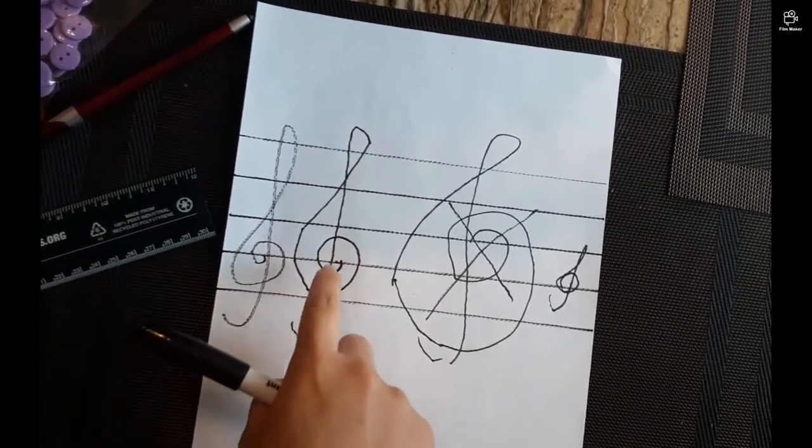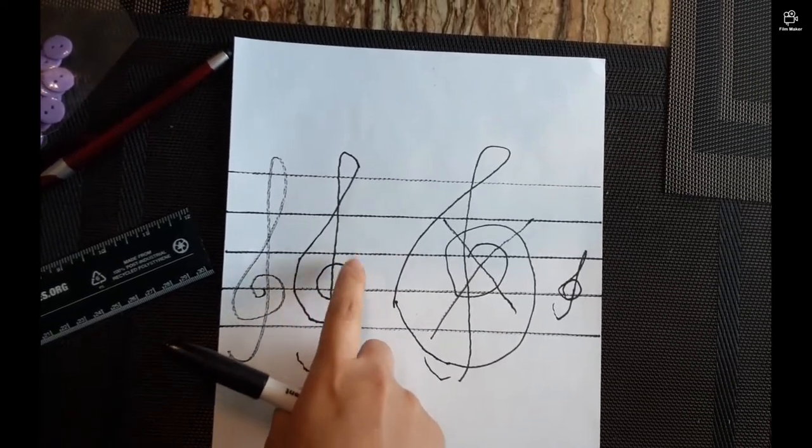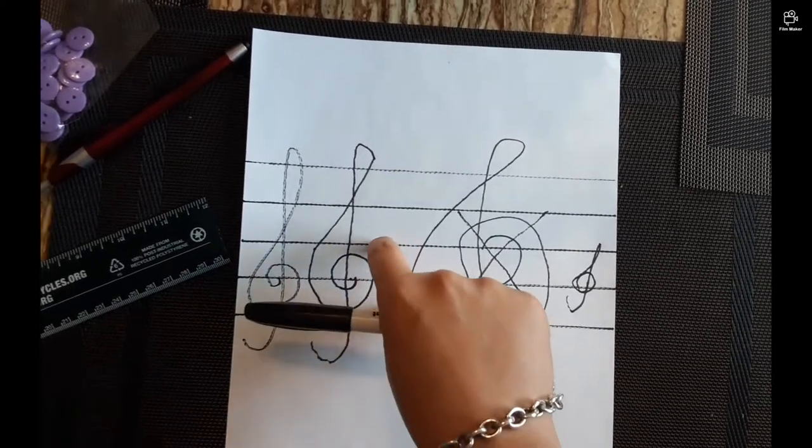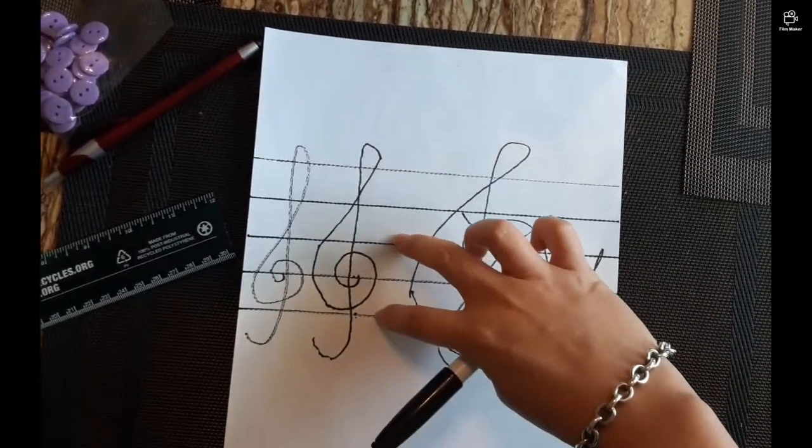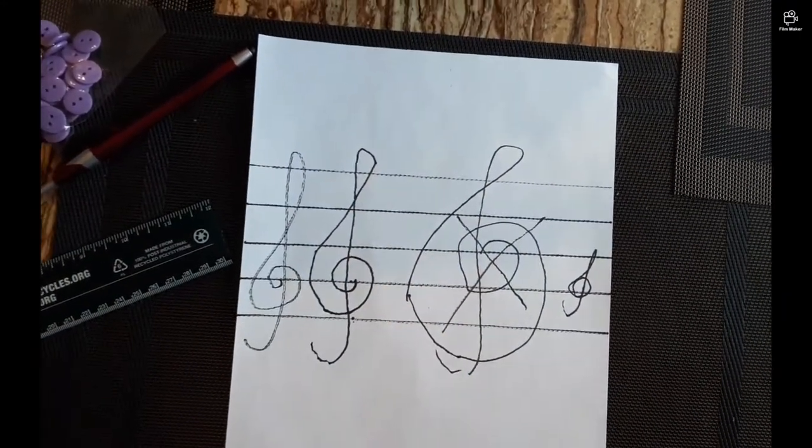You have to make sure the line goes above the top line and then all the way down here. But the spiral is where it's important. Starting from the second line from the bottom. Spiral. You see how I'm not going over this line or this line, right? The round shape stays within these lines. And then the straight line goes up and down.